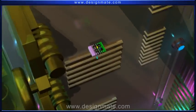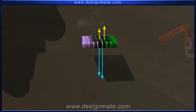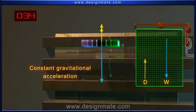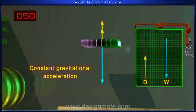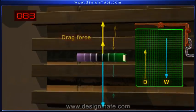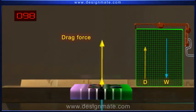Coming back to our previous experiment, as the object falls with a constant gravitational acceleration, it keeps attaining more and more velocity. Simultaneously, the drag force acting on the body also keeps on increasing.